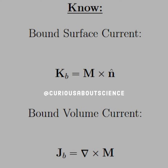Why does that matter? Well, we know we can find the magnetic field from the bound current states: the surface bound current is M cross n̂, and the volume bound current is the curl of M.